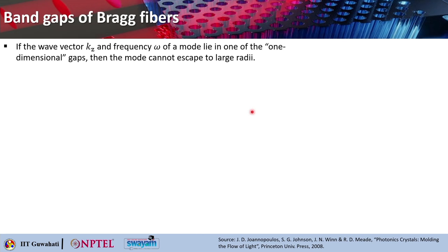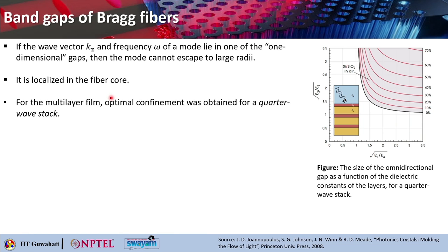If the wave vector k_z and the frequency ω of a mode lie in one of the one-dimensional gaps, that mode will not be able to escape to large radii — it will be rather localized in the fiber core. For the multi-layer film, the optical confinement was obtained for a quarter wave stack that you have seen earlier. If you consider a quarter wave stack here, the dense medium is the red color one and the rarer medium is this light color one, and this is basically the one-dimensional multi-layer film.